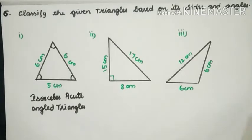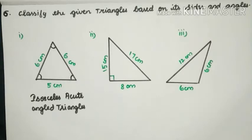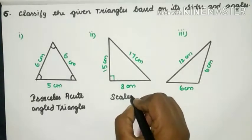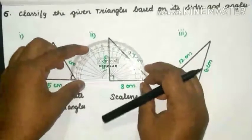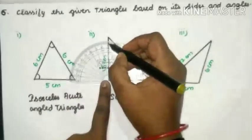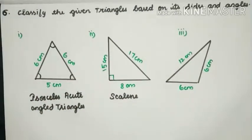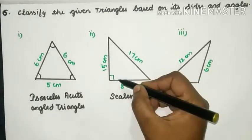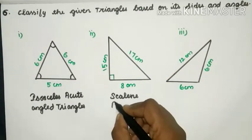Second one: all three sides are different in length, so it is a Scalene triangle. Measuring the angle — placing the center of the protractor at the vertex, it is exactly 90°. If one angle is a right angle, that is 90°, it is called a Scalene Right Angled Triangle.